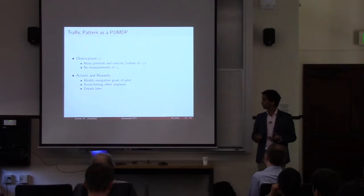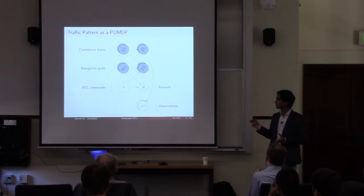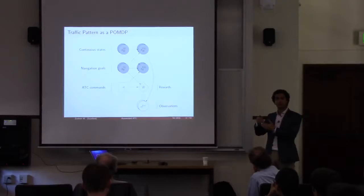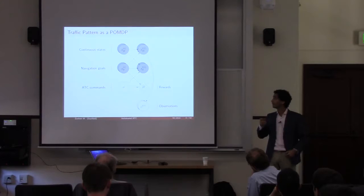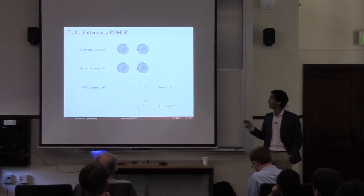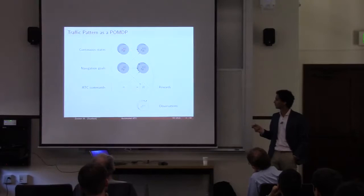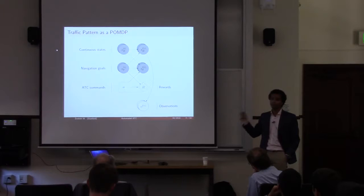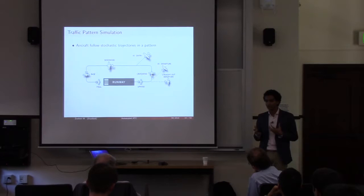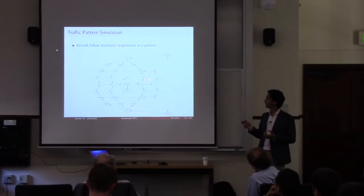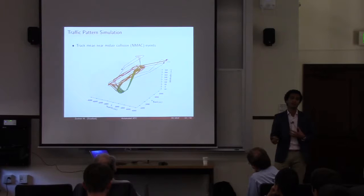Going back to the Bayesian network framework, I described how one aircraft behaves, but to model the entire pattern we need a factored state. The idea is stacking K aircraft in the pattern, with their transitions determined accordingly. Solving for optimal actions can be difficult, but you can always simulate this. Using a nominal pattern based on engineering judgment — aircraft start on a runway, go to upwind, may extend upwind with some probability of turning left or right — we can simulate aircraft in the pattern and track how often they come close to each other in what we call a near mid-air collision.